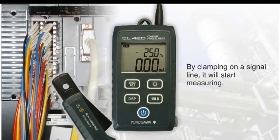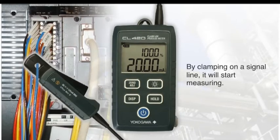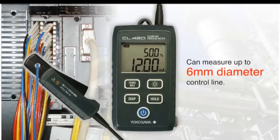By clamping on a signal line, the unit starts to measure. With a large core diameter of 6 millimeters, larger signal lines can be measured.